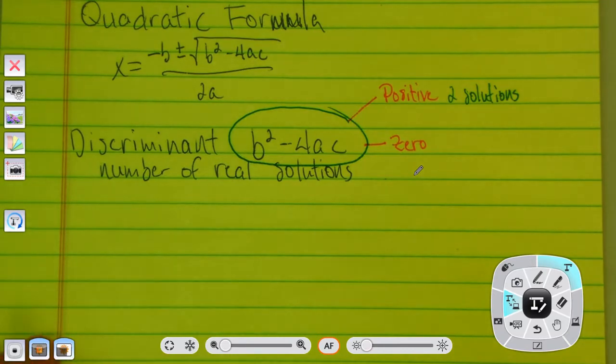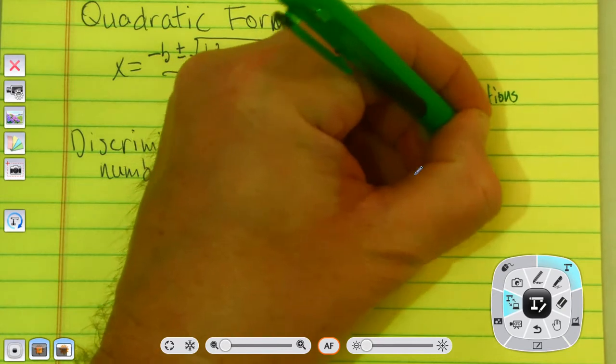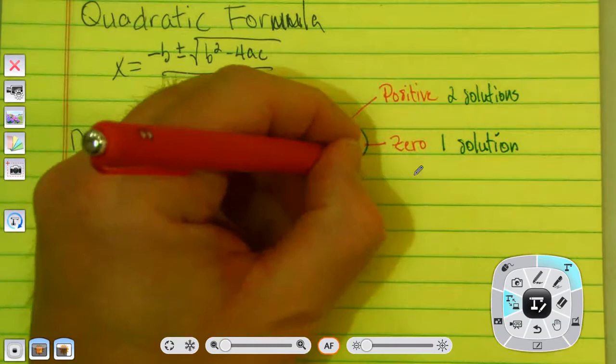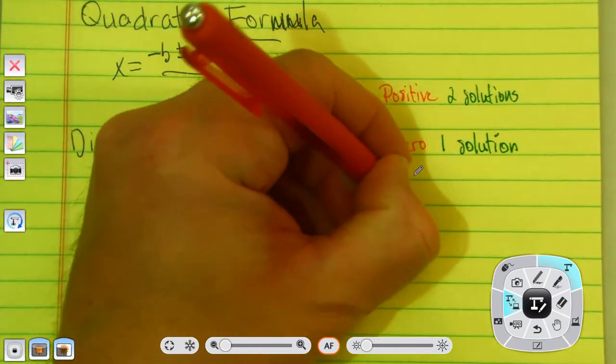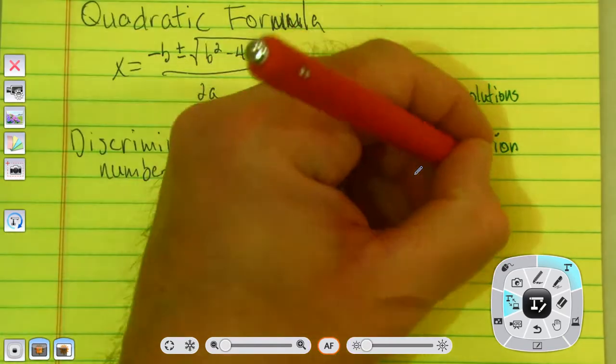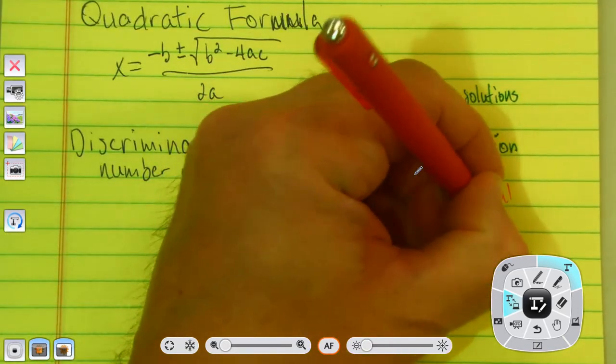If the discriminant is zero, how many solutions do you think there are? We've kind of done that before. So, if the discriminant is negative, it's no real solutions.